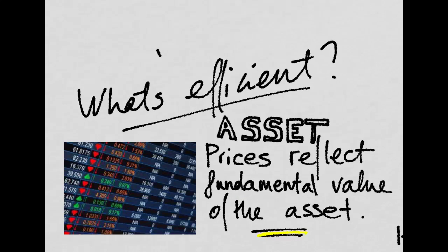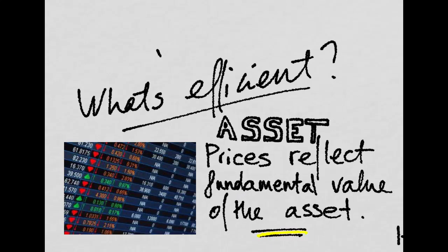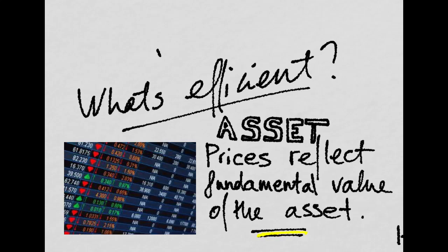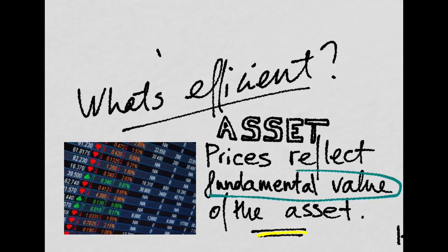So what is the meaning of efficient in this context? Efficient means that asset prices — the prices of stock or any security — reflect the fundamental value of the asset. The key question here is: how do we know the fundamental value of an asset?